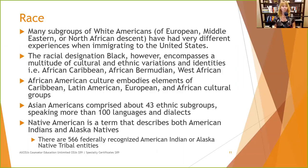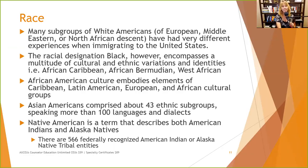African American culture embodies elements of Caribbean, Latin American, European, and African cultural groups. Asian Americans comprise about 43 ethnic subgroups speaking more than 100 languages and dialects. Native American is a term that describes both American Indians and Alaskan Natives — there are 566 federally recognized American Indian or Alaskan Native tribal entities. That's a lot of different belief systems to be sensitive to.